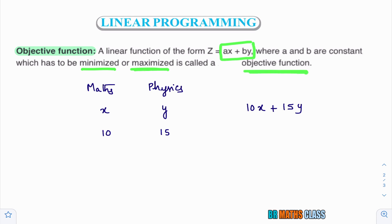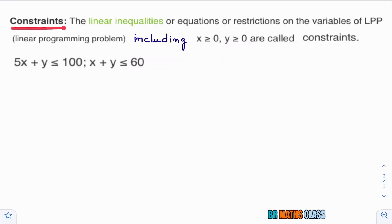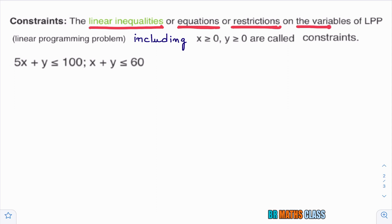I hope you understand what is objective function. The next definition is constraints. We use this word very frequently while doing linear programming problems. What is meant by constraints? The linear inequalities — while doing problems, whatever linear inequalities or equations we get are restrictions. Linear inequalities are equations or restrictions on the variables of a linear programming problem, including x ≥ 0, y ≥ 0. These are called non-negative constraints, because x ≥ 0 and y ≥ 0 means x and y are positive, lying in the first quadrant.